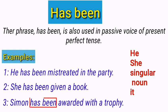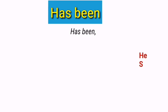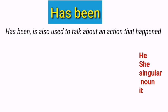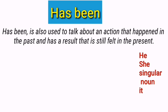'Has been' is used to form a passive voice sentence of the present perfect tense, so it can also be used as a passive construction of present perfect tense. The next usage is: 'has been' is also used to talk about an action that happened in the past and has a result that is still felt in the present. Simply, it is used when we talk about an activity which happened in the past but the result of that activity still exists.